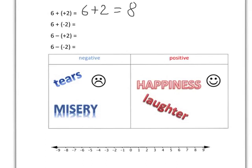Similarly, if I'm adding something negative to my life — adding tears, misery, unhappiness — I'm adding those to my life, so my life is getting less, getting worse. In other words, adding all that negative stuff is taking away from my life.